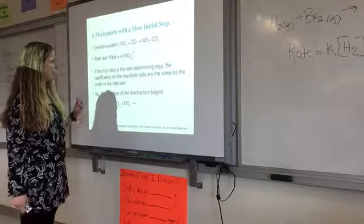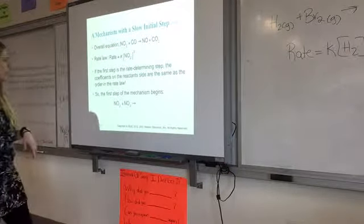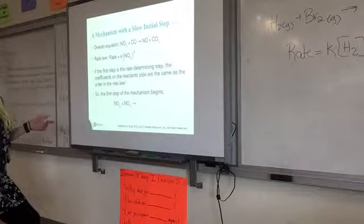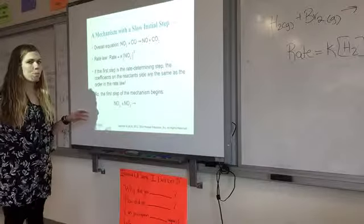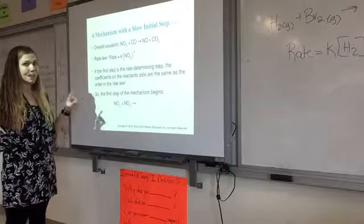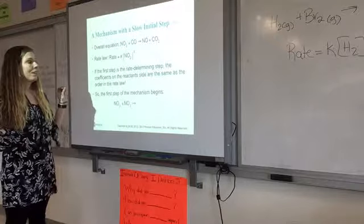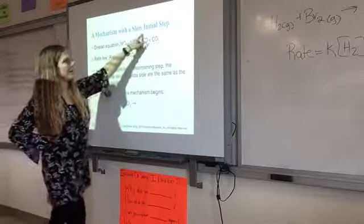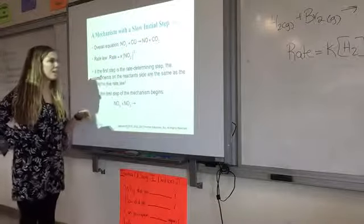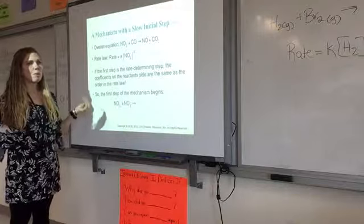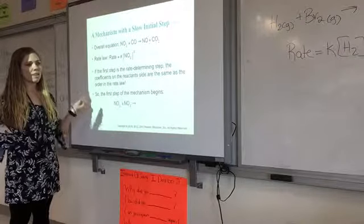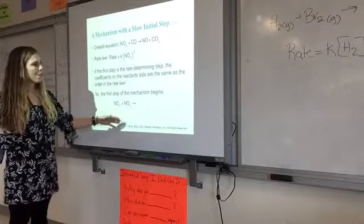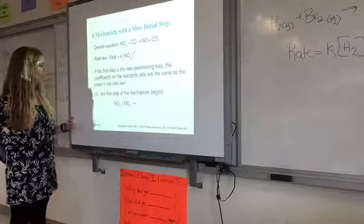So it says if the first step is the rate determining step, the coefficients on the reactant side are the same as the order in the rate law. That's important. So only if your rate law is coming from the first step, which it is, because they're telling us that it does, then that means that the number of moles you have as coefficients in that balanced equation for that elementary step will also be your order in the rate law.